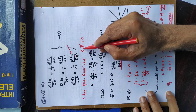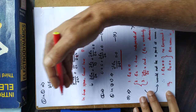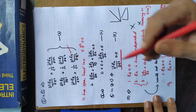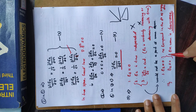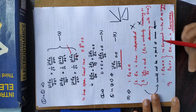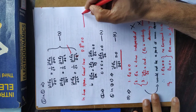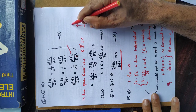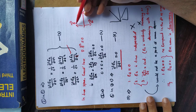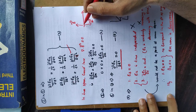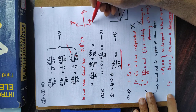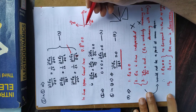Similarly, since del·B = 0 (the fourth Maxwell's equation), the same steps can be done for the magnetic field. We can also show that Bz = 0, and we conclude that electromagnetic waves are transverse in nature.